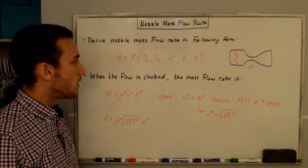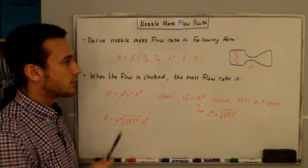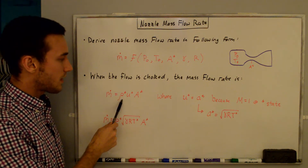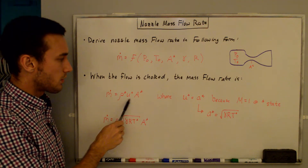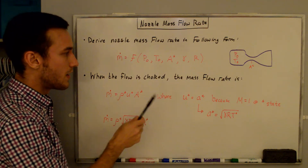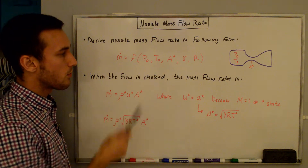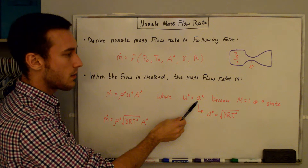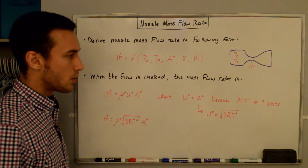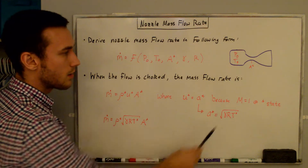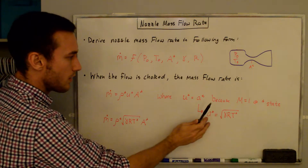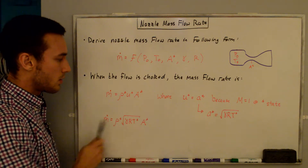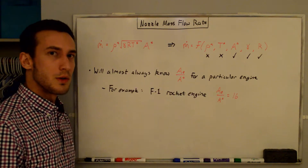When the flow is choked, we know that the mass flow rate can be written as ṁ = ρ* u* A* — that's the static density at the throat, the velocity at the throat, and the throat area. Since the flow is choked, the Mach number equals 1 at the throat, so u* equals a*, the local speed of sound, which we can write as the square root of γ R T*, where T* is the static temperature at the throat.